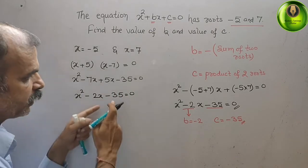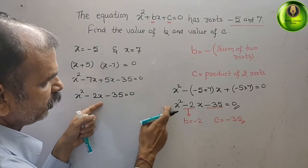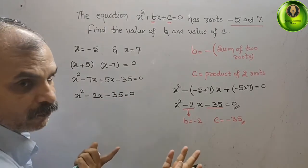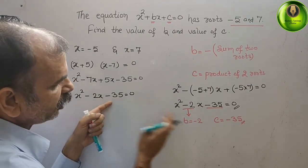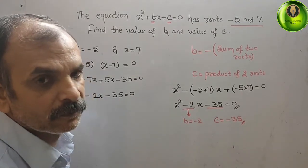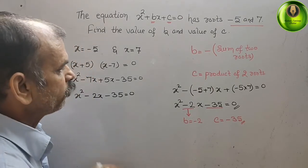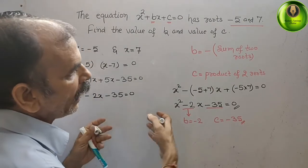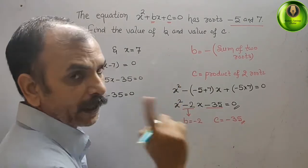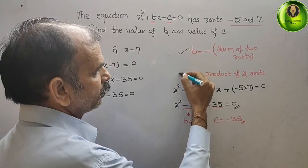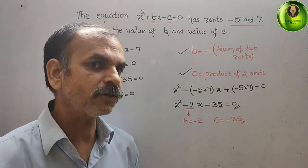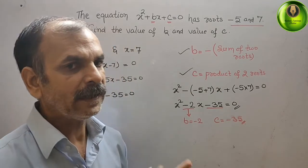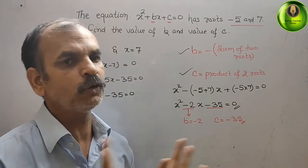Again you got the same equation. Therefore b is equal to minus 2 and c is equal to minus 35. You can follow any of the methods, but remember: b is nothing but the negative of the sum of the two roots, and c is nothing but the product of two roots.